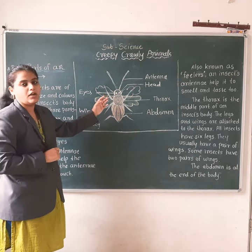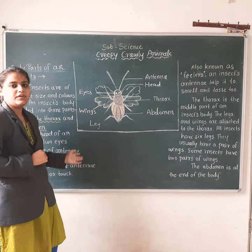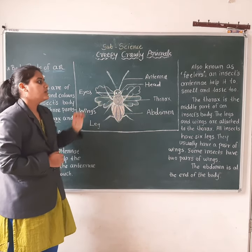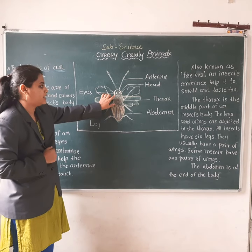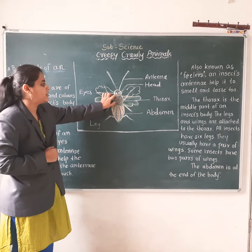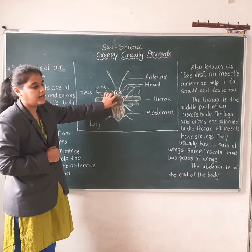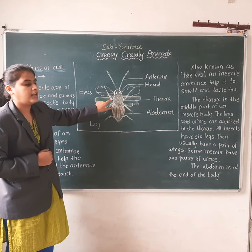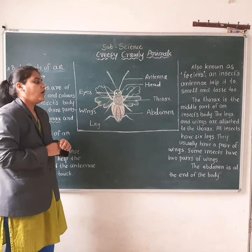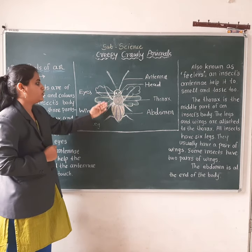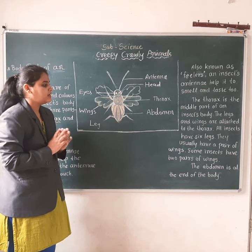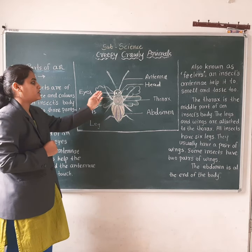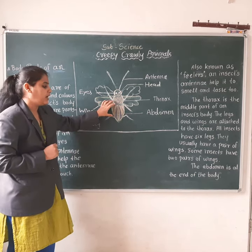The antennae help the insect to smell and taste. The thorax is the middle part of the insect's body, and the legs and wings are attached to it. All insects have six legs, and they usually have a pair of wings — some insects have two pairs of wings. The abdomen is the end of the body.